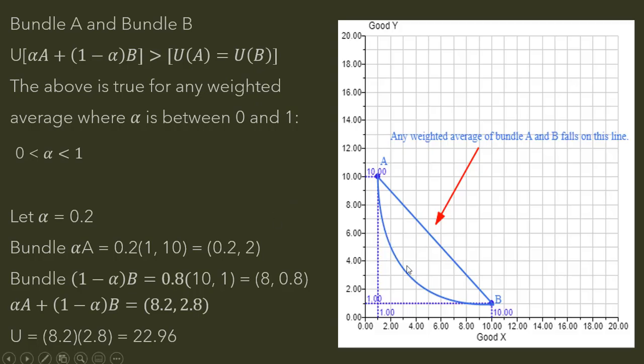And just to look at this graphically here, we have an indifference curve going through Bundle A - one unit of X, 10 units of Y - and Bundle B - one unit of Y, 10 units of X. And if we connect a straight line between those points, any weighted average of Bundle A and B is going to fall on this line, and any point that falls on this line would coincide with a higher indifference curve.